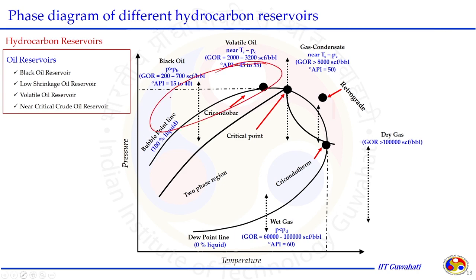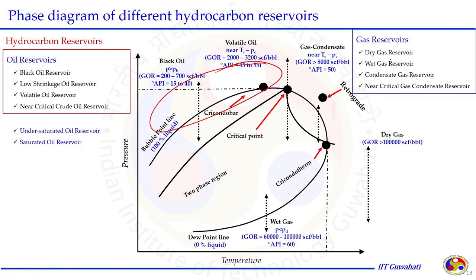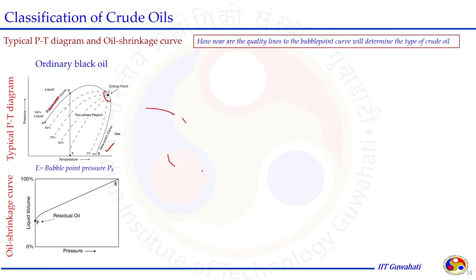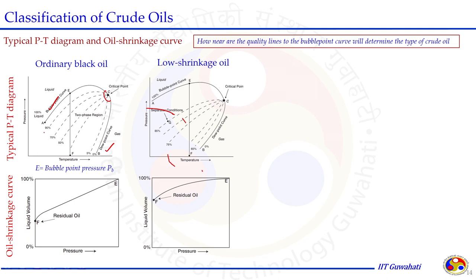How does the PT diagram differ for different crude oils? For ordinary black oil, on the pressure-temperature diagram the tie lines are almost equally spaced. This is the critical point, bubble point, and dew point. Between bubble point and dew point, tie lines are equally spaced. At the saturated condition (point E), when we isothermally reduce pressure into the two-phase region, we cross different tie lines — for example, 90% liquid at one pressure, then 70% liquid at a lower pressure. When comparing this on the oil shrinkage curve (liquid volume vs. pressure), we get an almost straight line — indicating an ordinary black oil reservoir.